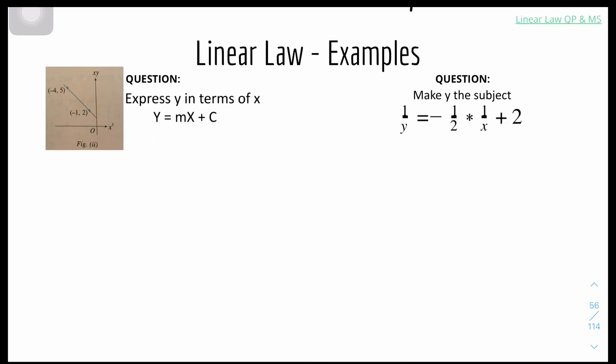Here are some examples to express y in terms of x. We have this graph where the y value is xy and the x value is x cubed. In this case where we have the y axis as xy and the x axis as x cubed, we call this graph xy plotted against x cubed. Let's find the gradient first. The gradient is 5 minus 2 over minus 4 minus minus 1, which is minus 3 over minus 3, which is minus 1. That's the first clue.